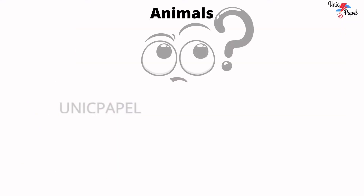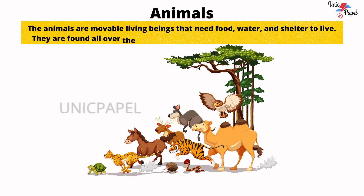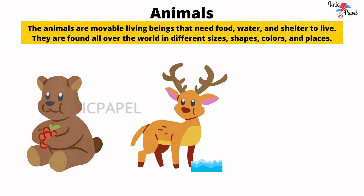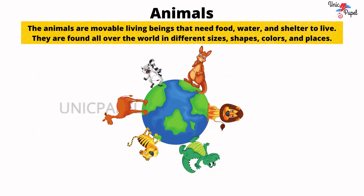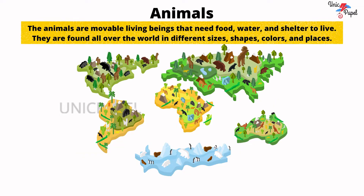Types of animals. Define animals. Animals are movable living beings that need food, water, and shelter to live. They are found all over the world in different sizes, shapes, colors, and places.